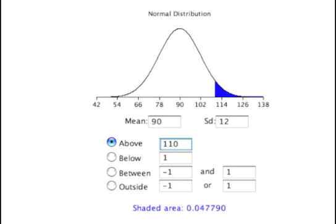The calculator calculate area for a given x can be used to calculate areas under the normal distribution. Here it is used to calculate the area above 110 for a normal distribution with a mean of 90 and a standard deviation of 12. The area is shown in the figure and numerically at the bottom of the screen. The area is 0.047790.